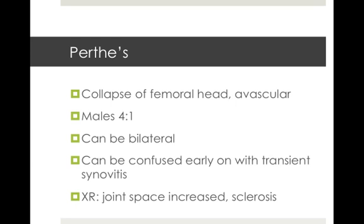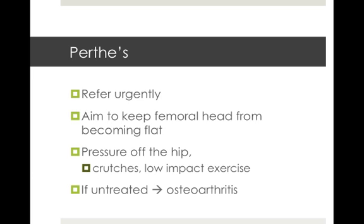The x-ray will show signs including a joint space increase, sclerosis of the head, and a collapse of the head on certain views. Refer urgently if there's any suspicion. The aim is to keep the femoral head from becoming flat — taking pressure off the hip using crutches and low-impact exercise such as swimming can be beneficial. If left untreated, the child may suffer osteoarthritis from an early age.